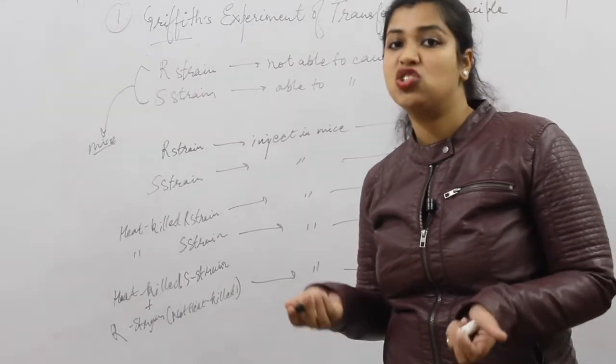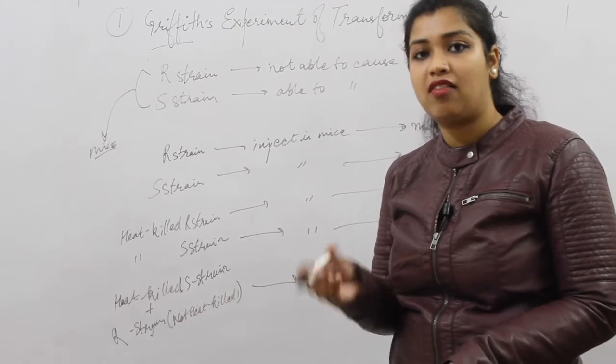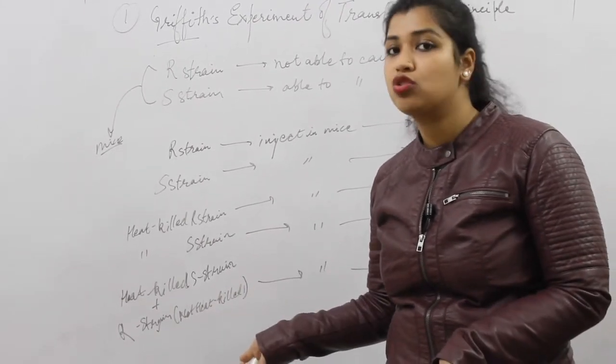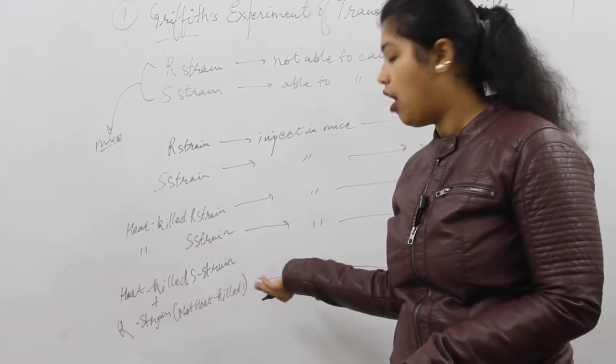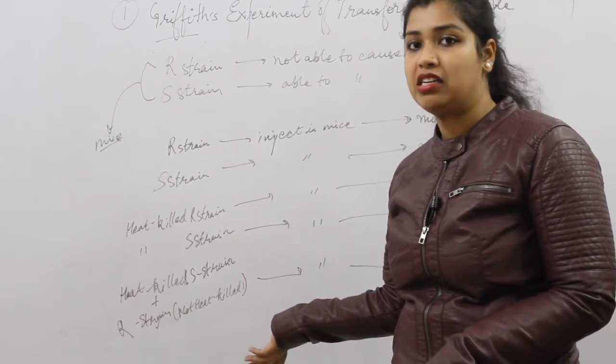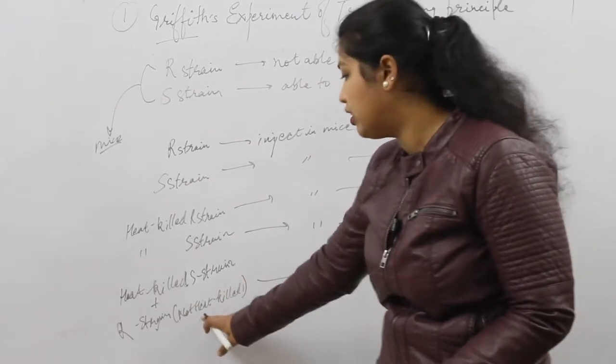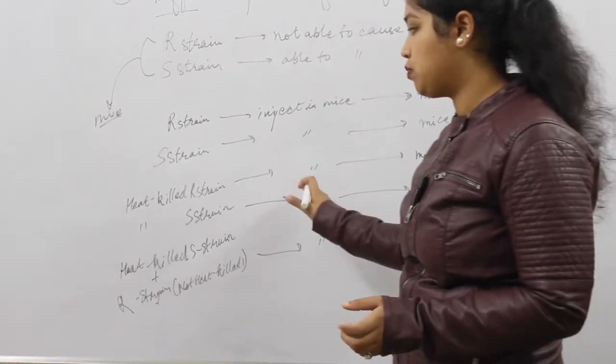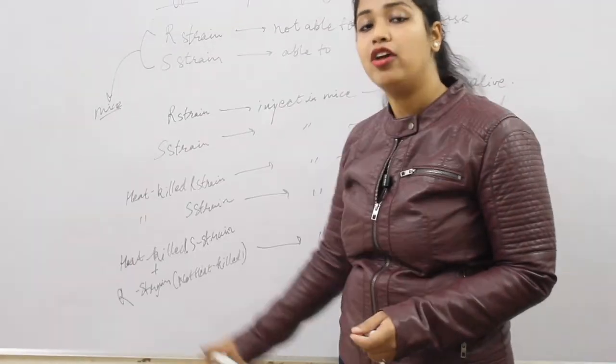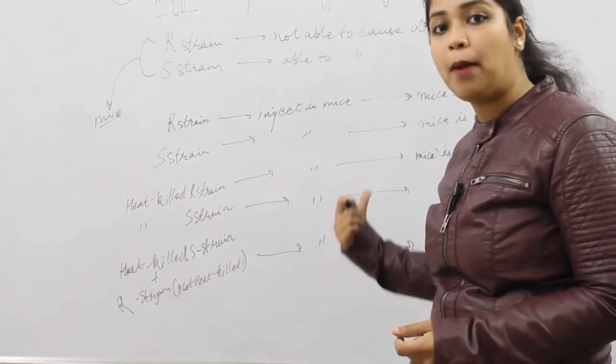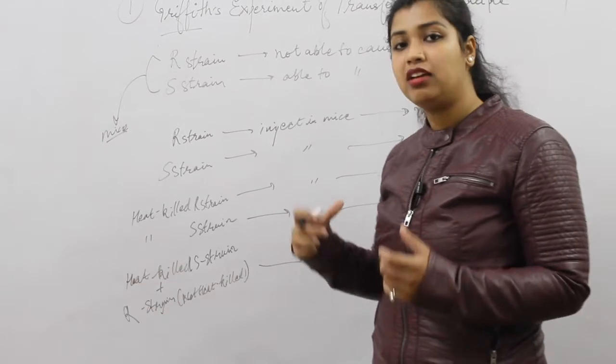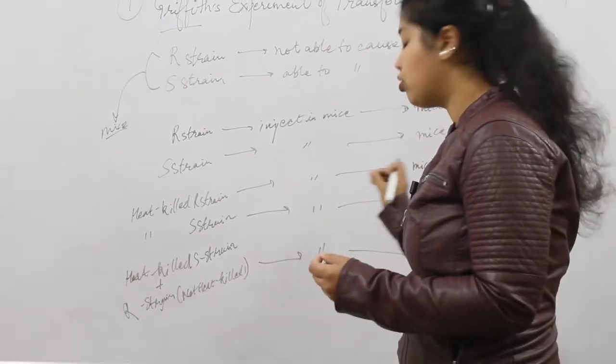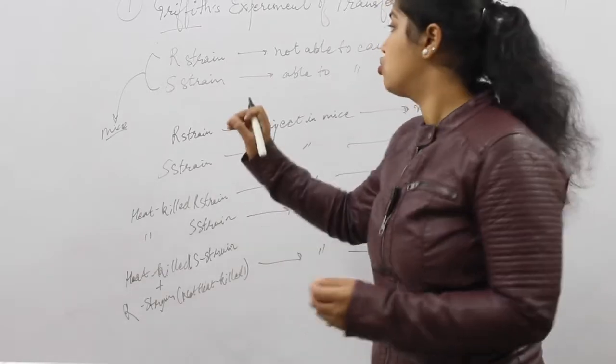How is this possible? The disease-causing species was killed, and the non-disease-causing strain was not heat-killed. So how did the mouse still die? According to this experiment, the R strain is alive, so disease should not happen, but here there is disease. So what he concluded, and what did he do? He took out live cells from the dead mouse.